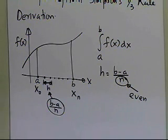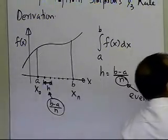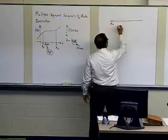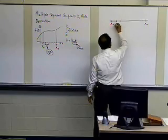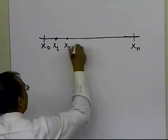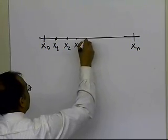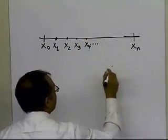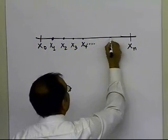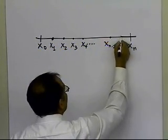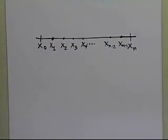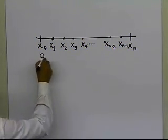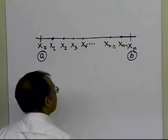I'm going to draw the x-axis a little larger so we can see what we are trying to do. So we have x0 on the left and xn on the right. Breaking it up into n equal segments, the points are labeled x1, x2, x3, x4, and so on, continuing until we reach x of n minus 2, then x of n minus 1, and finally xn. x0 is nothing but A, and xn is nothing but B.